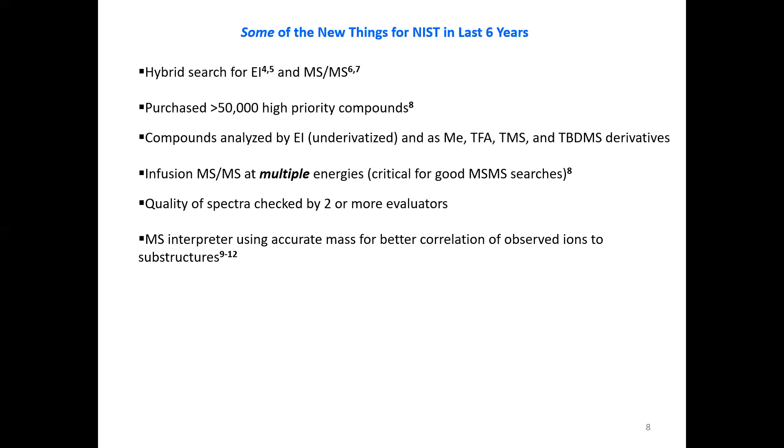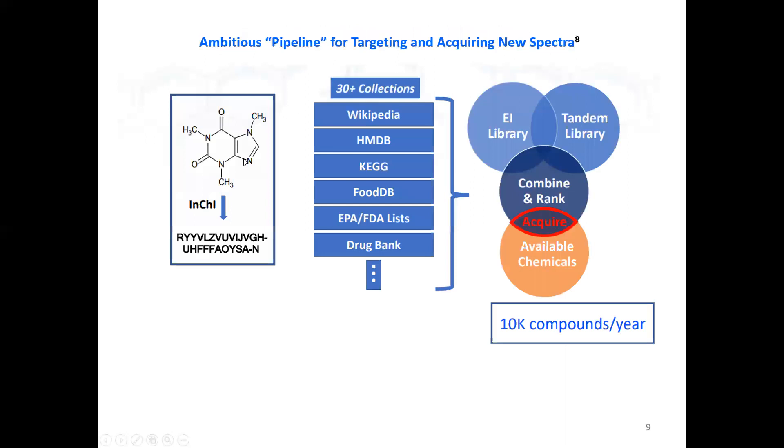Mass spec interpreter has been modified to use accurate mass for better correlation of observed ions to substructures within especially important in MSMS or tandem type data, but is also applied in EI also. They have an ambitious pipeline for targeting and acquiring these new spectra each year. They look over 30 collections searching for compounds of interest that show up in these collections, and then they acquire them, any available chemicals that meet these targets, and then they combine and rank them. On average, there's about 10,000 compounds per year, but these create many, many more spectra.